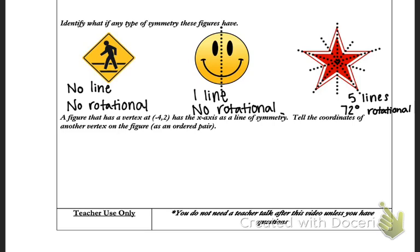Our final problem states a figure has a vertex of negative 4, 2 that has the x-axis as a line of symmetry. Tell the coordinates of another vertex on the figure as an ordered pair. So I'm going to go ahead and draw a coordinate plane and plot my point negative 4, 2.